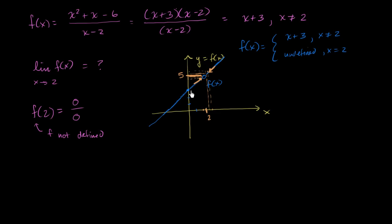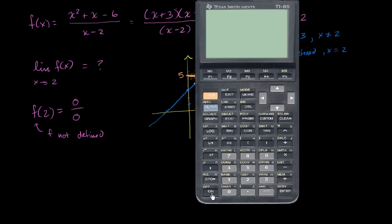If we just graphed a line with slope 1 and y-intercept 3, this value is 5. Now we can also try to do this numerically.